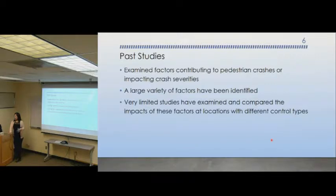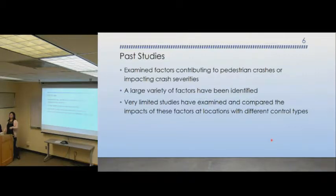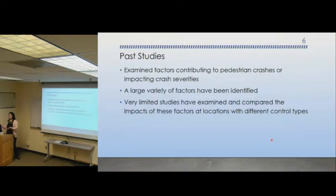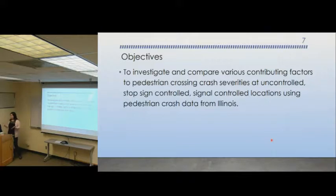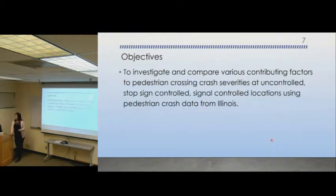Pedestrian safety is a very hot research topic, and many researchers have examined contributing factors to pedestrian crashes. Factors like gender, age, lighting conditions, weather, and surface conditions have been identified. But very limited studies have examined different control types and their effect on severity levels. To fill this gap, this research aims to investigate and compare various contributing factors to pedestrian crossing crash severity across three types of controls: uncontrolled, stop sign or yield sign controlled, and signalized locations, using data from Illinois.